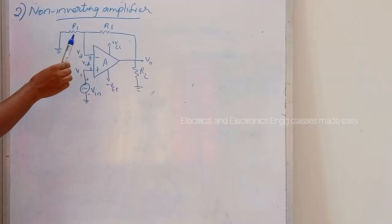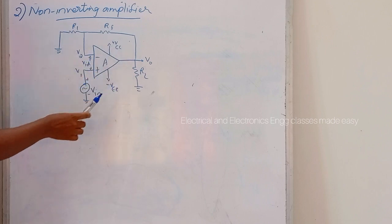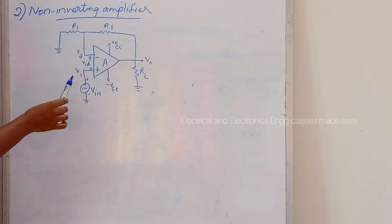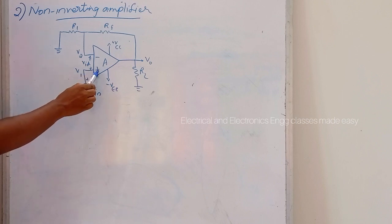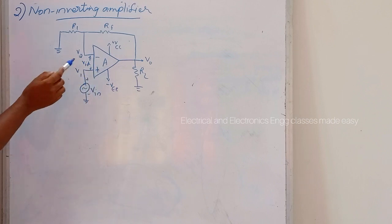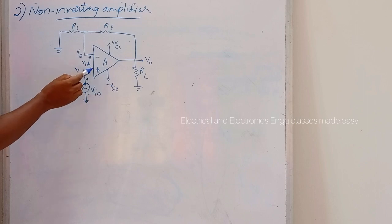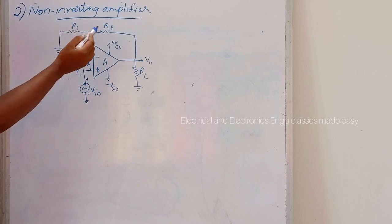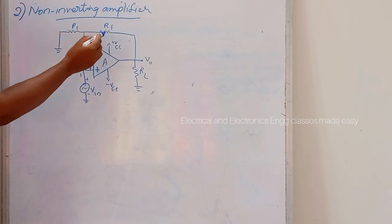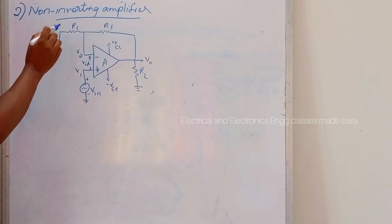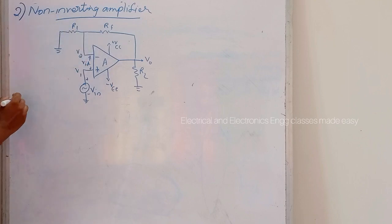Next is the non-inverting amplifier. This is the circuit diagram for the non-inverting amplifier. Here the input is given to the non-inverting input terminal, that is the positive input. R1 and Rf are the feedback voltage divider circuit forming the feedback divider circuit.